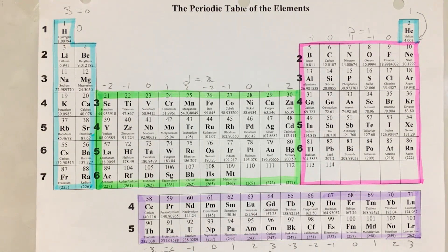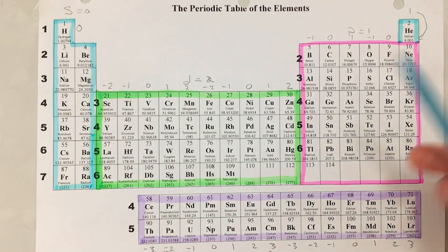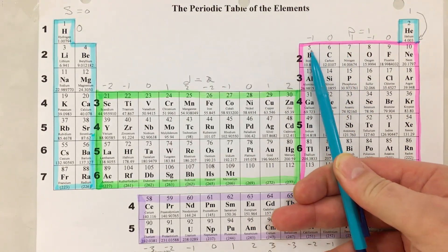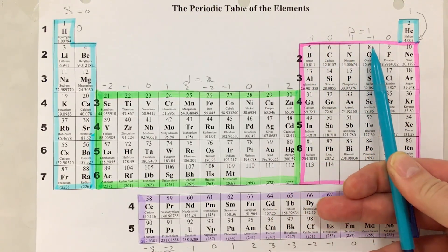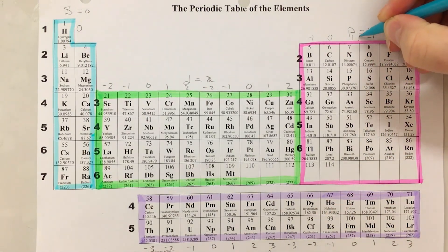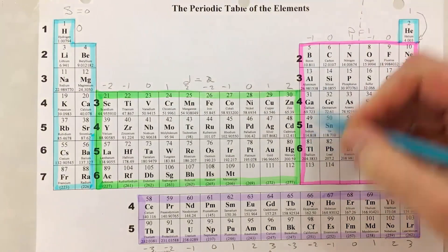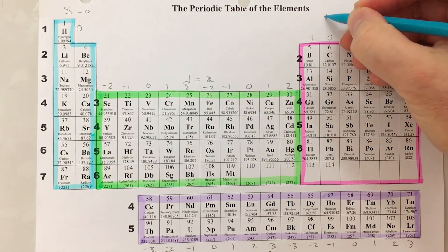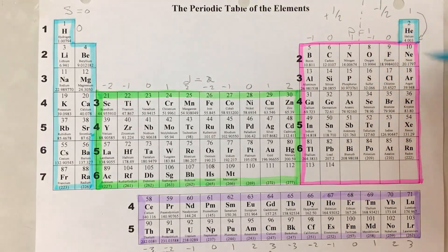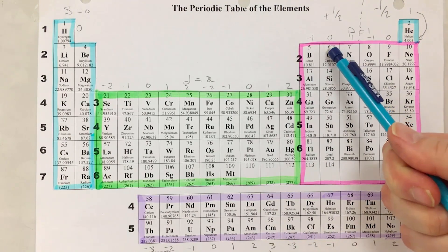The fourth quantum number tells you whether you're the first or second electron in an orbital. On the periodic table, for the p orbitals, the first three columns are all going to be the first electron in — so they get plus one half. The second three columns are the second electron in, so they get minus one half. We can draw a dotted line down the middle of the p block to separate them.